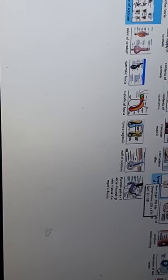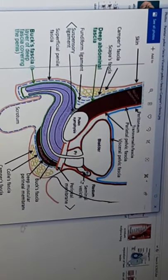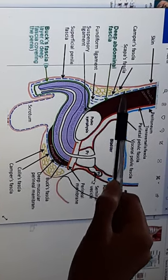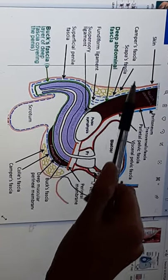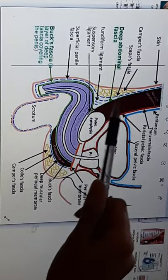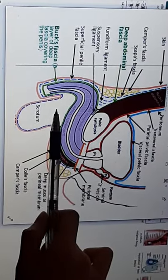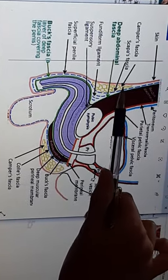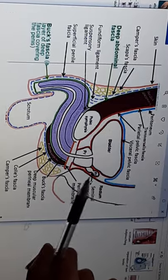Next is the superficial fascia, which has two layers: a fatty layer and a membranous layer. On the abdomen, the fatty layer is called Camper's fascia and the membranous layer is called Scarpa's fascia. When Camper's fascia comes down to the scrotum, it is replaced by a muscle known as the dartos muscle. The dartos muscle has sympathetic nerve fibers and is responsible for wrinkling of the skin.